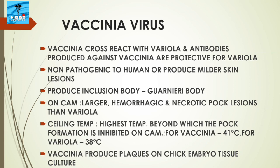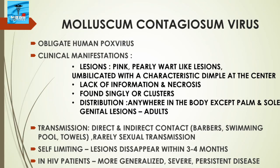Vaccinia produces inclusion bodies called Guarnieri bodies, while variola produces Paschen bodies. On chorioallantoic membrane (CAM), vaccinia produces larger hemorrhagic necrotic pock lesions than variola. Regarding ceiling temperature — the highest temperature beyond which pock formation is inhibited on CAM — it is higher for vaccinia virus at 41°C than for variola virus at 38°C. Vaccinia produces plaques on chick embryo tissue culture.